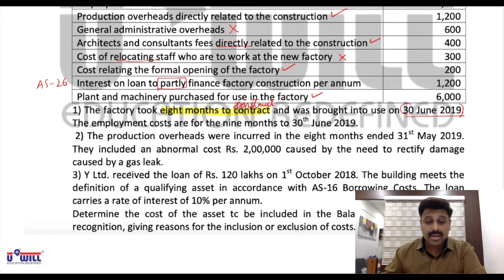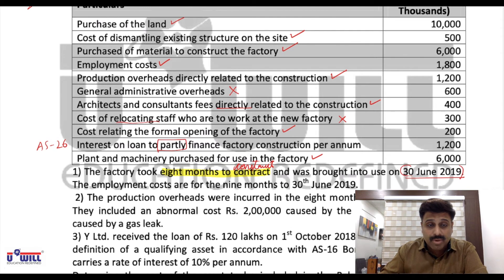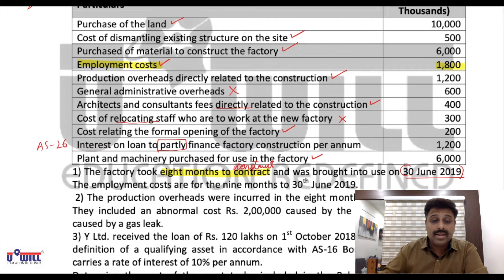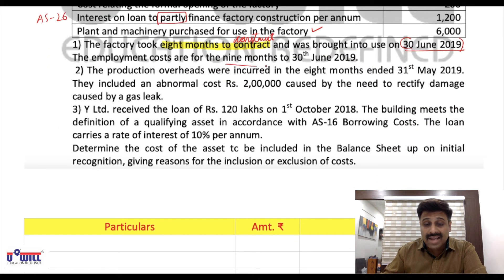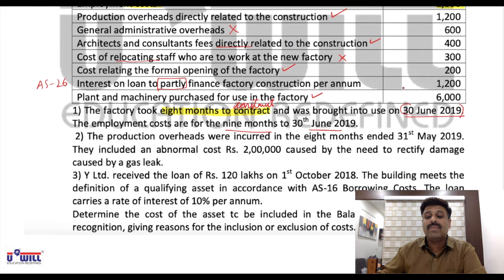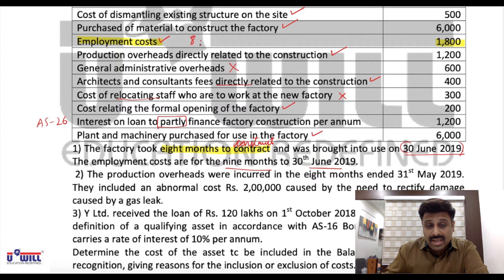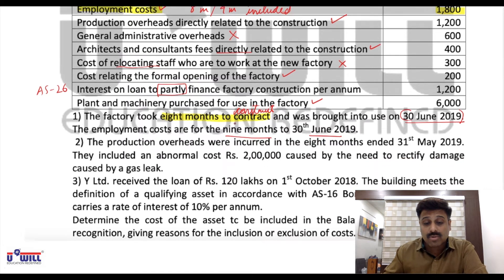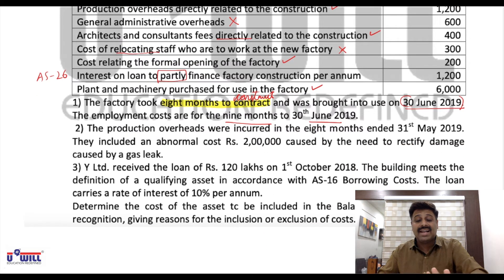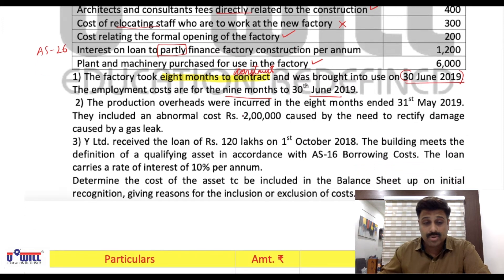The factory was constructed by 31st May but brought into use on 30th June. Employment costs are given for 9 months totalling 1,800. We cannot include 9 months because construction took only 8 months, so only 8 months' amount can be included. The one idle month cost cannot be capitalized.